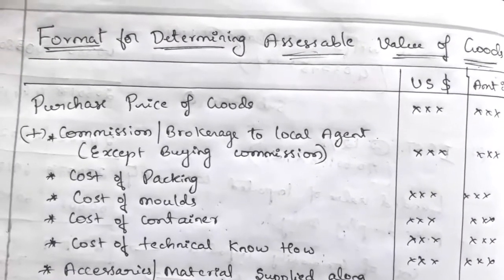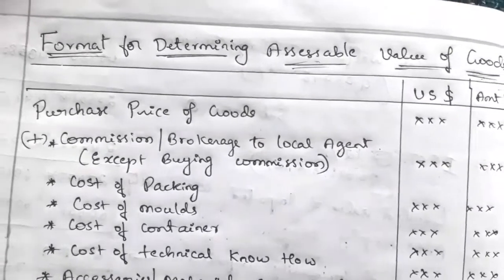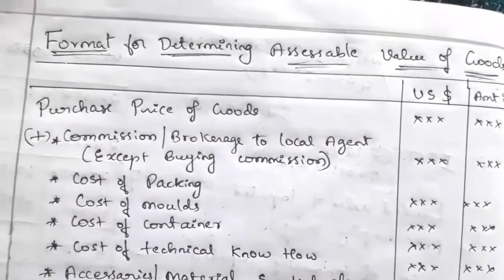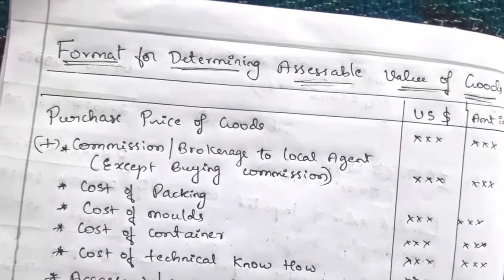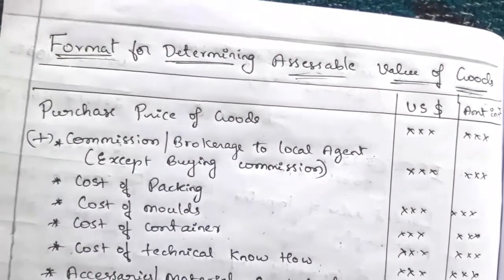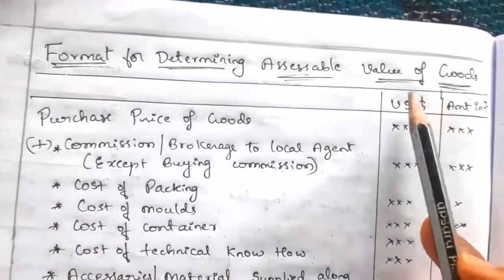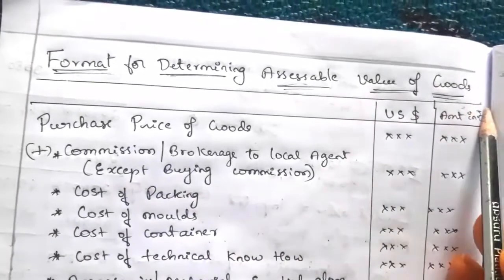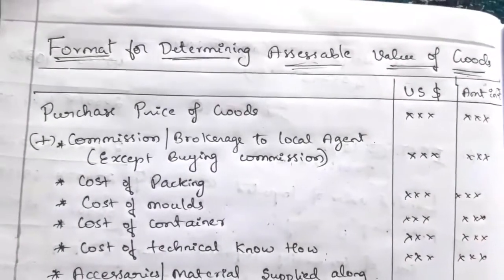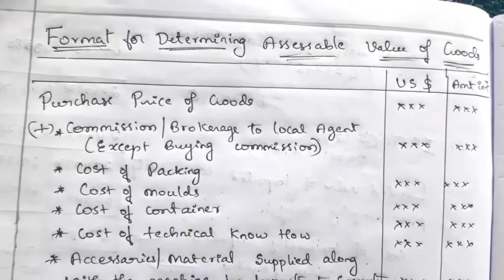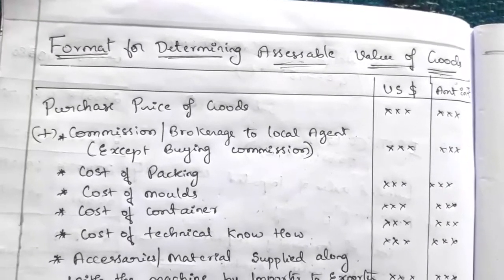Hello students, today we are going to learn about the format for determining the accessible value of goods. The importer who imports goods from another country has to pay the custom duty. This custom duty is a tax which is levied on the value of imported goods. This value of imported goods is the accessible value of goods, and today we will learn how to compute it for custom duty calculation purposes.